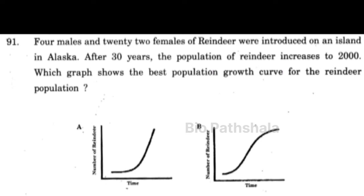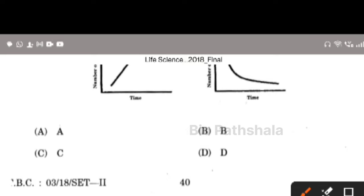Next question: 4 males and 22 females of reindeer were introduced on an island in Alaska; after 30 years the population increased to 2000. Which graph shows the best population growth curve for the reindeer population? This graph is declining, this one is not static, another becomes constant from a certain point and does not continue growing. The correct answer is option number A.